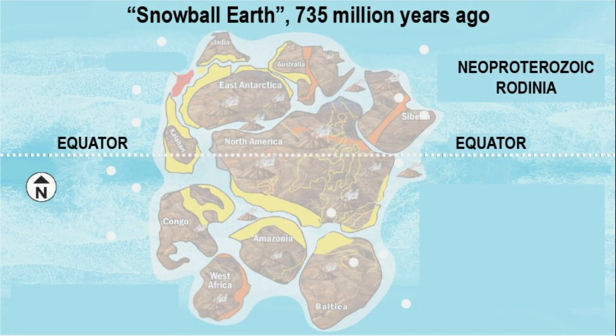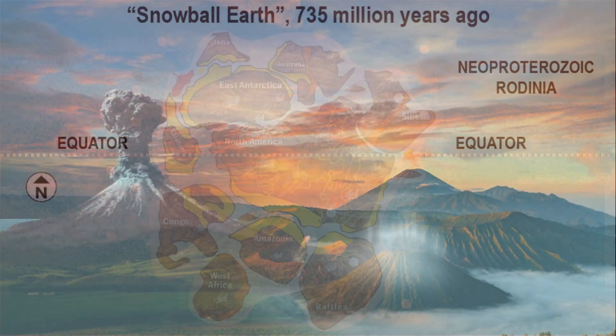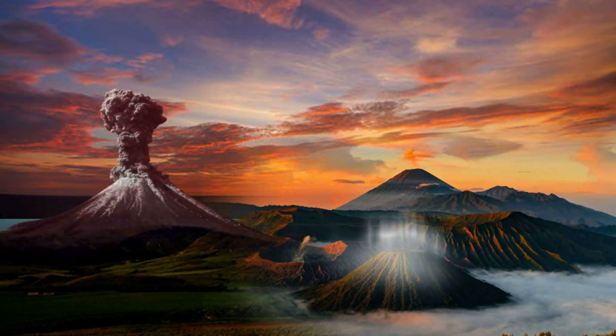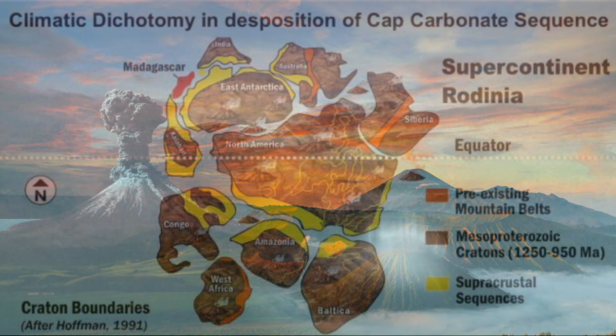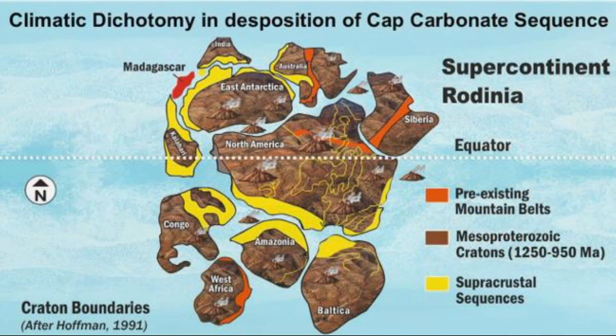Compared to the Sturtian, the Marinoan epoch was much shorter. Why? Perhaps because of the more widespread volcanic eruptions of the time. Almost synchronous was the breakup of the supercontinent Rodinia.